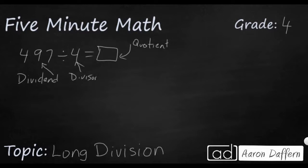When we use the long division algorithm, we actually flip things around. We put the divisor on the outside, put a little division bar, and then we put the dividend on the inside, 497, and then our quotient is going to go up on top.